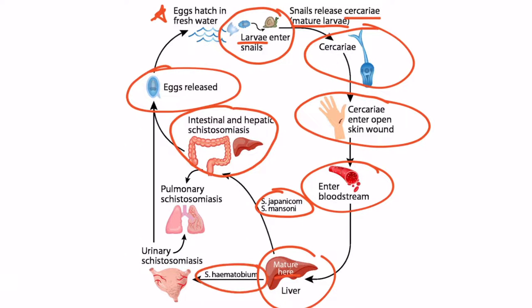Now two species, schistosoma mansoni and schistosoma japanicum, will go to the intestinal vessels and cause intestinal and hepatic schistosomiasis. The third species, schistosoma hematobium, will then go to the urinary vessels and cause urinary schistosomiasis. And all three species, if chronic, can lead to pulmonary schistosomiasis. In any case, eggs can be released, and this continues the cycle.